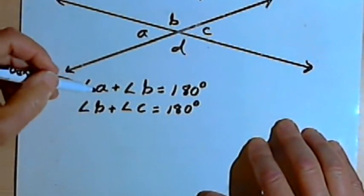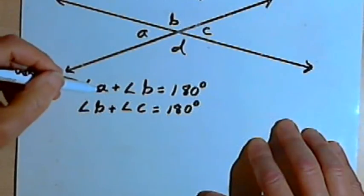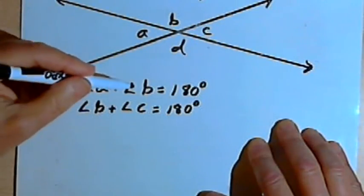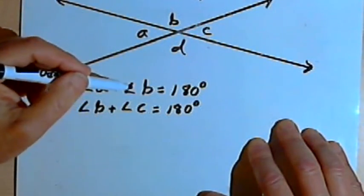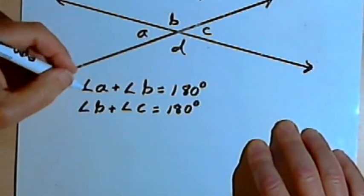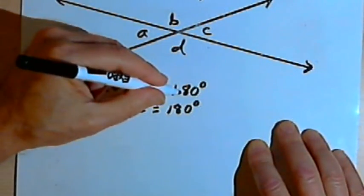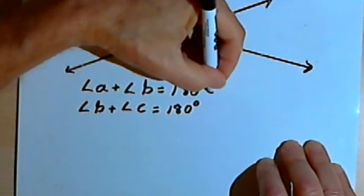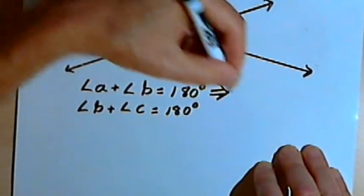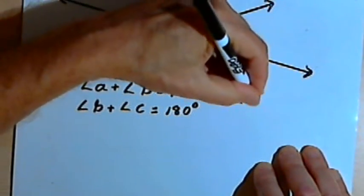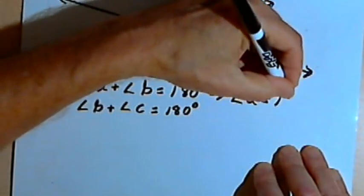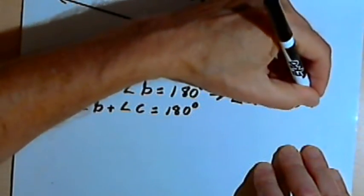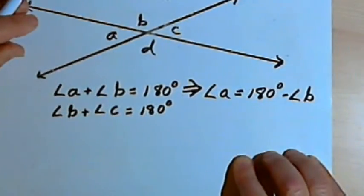Now I've got two equations. What I'm going to do is for each equation I'm going to subtract angle B from both sides. So that first equation, angle A plus angle B equals 180 degrees, is now going to become angle A equals 180 degrees minus angle B.